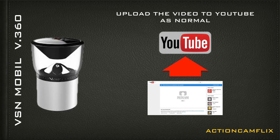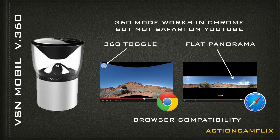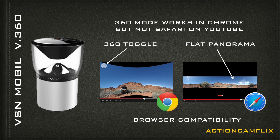Now your file is ready. All you need to do is upload your video as normal to YouTube. There is a catch: 360 mode works in Chrome but not in Safari. So to watch your video in 360 mode you must use the Chrome browser. In the Chrome browser you will see a 360 toggle on the left side of the screen. In Safari, the same video just looks like a flat panorama.